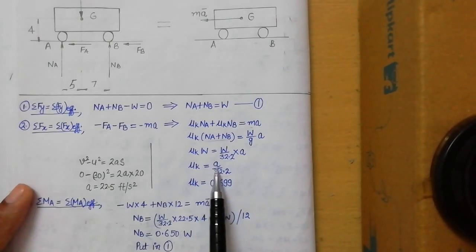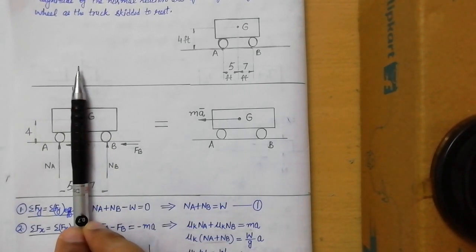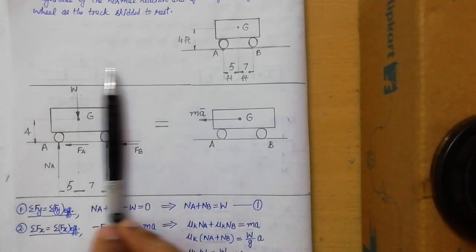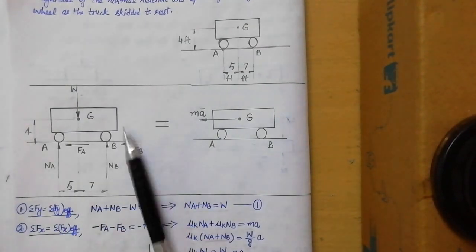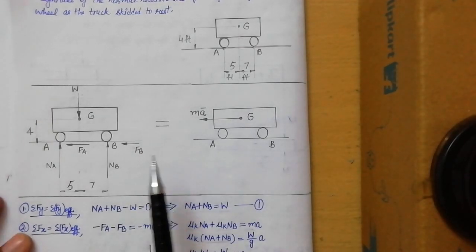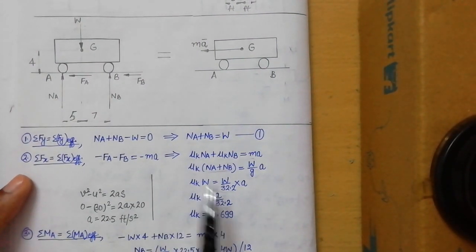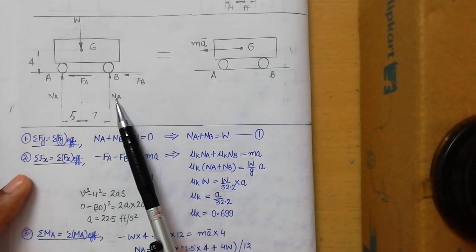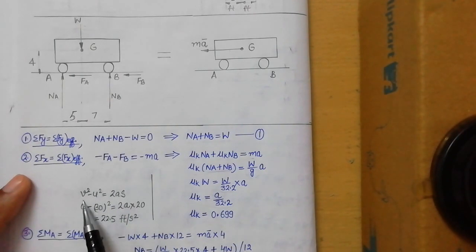To find acceleration a: when brakes are applied, the truck skids along a straight line with uniform retardation — this is uniformly accelerated motion. The three kinematic equations apply: v = u + at, v² − u² = 2as, and s = ut + ½at². Time is not given, so v = u + at and s = ut + ½at² cannot be used. We use v² − u² = 2as, which does not require time.